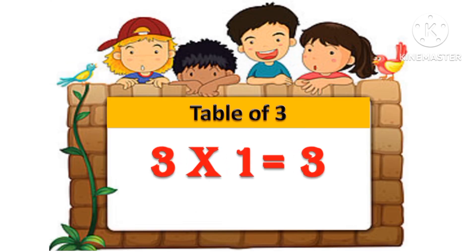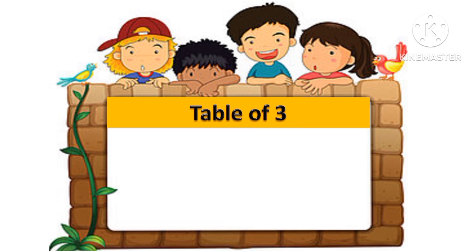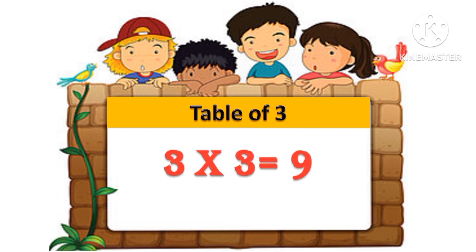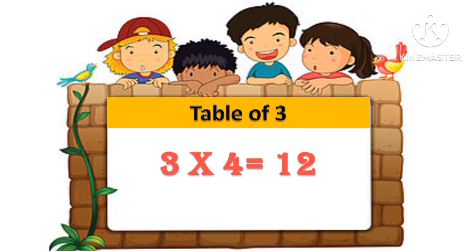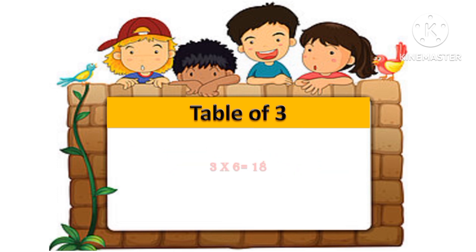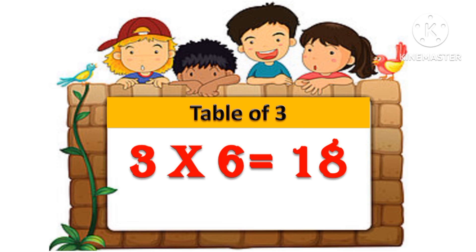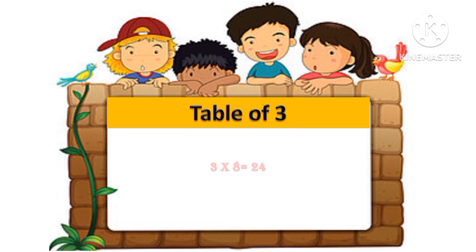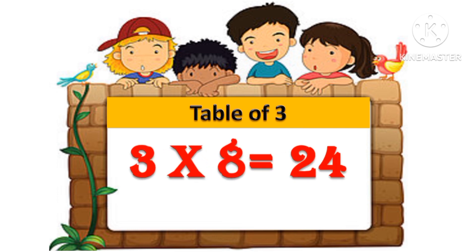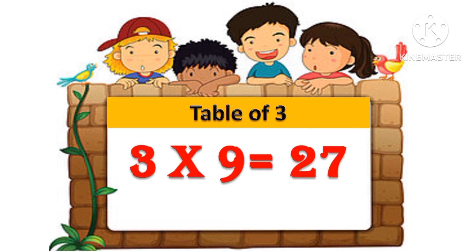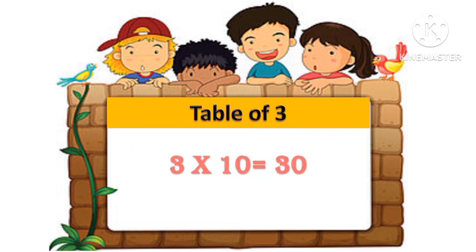Table of 3: 3 one's are 3, 3 two's are 6, 3 three's are 9, 3 four's are 12, 3 five's are 15, 3 six's are 18, 3 seven's are 21, 3 eight's are 24, 3 nine's are 27, 3 ten's are 30.